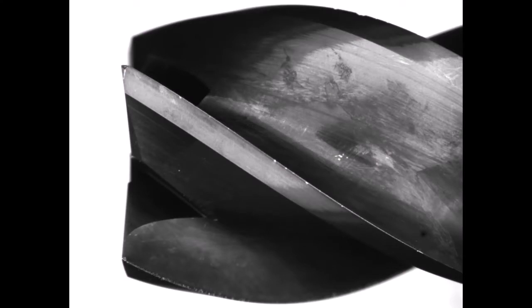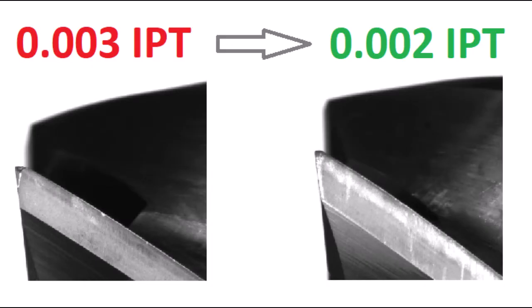If the corner is chipping rapidly, a simple fix is to lower the feed rate, which will lower the stress on the sharp corner.